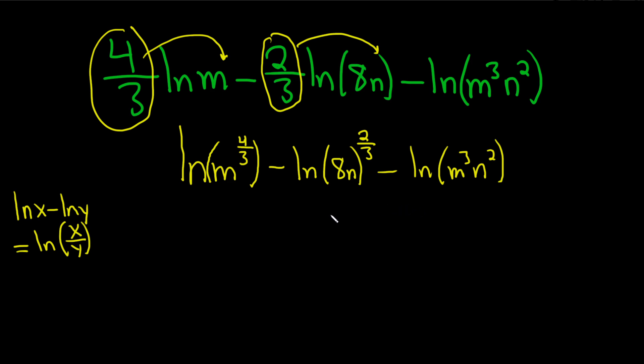Let's keep going. So now we have a minus here, so we can use this quotient rule. So this will be the natural log of m to the four-thirds over 8n to the two-thirds. Try to be really careful.